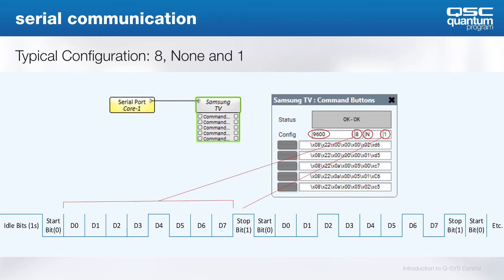This is a very common serial port configuration. In this case, 9600 refers to the baud rate, we have 8 data bits, no parity represented by the N, and 1 stop bit. If we look at the data flow of this serial signal at the bottom, we start at idle with the transmit pin held high. Then the start bit goes low.